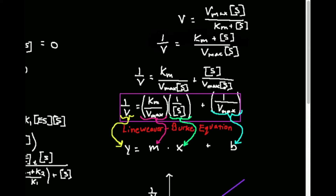We're going to start with the Michaelis-Menten equation from the last video: the rate of the enzyme is equal to the Vmax times the substrate concentration divided by the sum of Km plus substrate concentration. The first thing I'm going to do is take both sides of this equation and take the reciprocal. So when I take the reciprocal of V, that's one over V. Then the denominator goes to the numerator - Km plus the substrate concentration - and the numerator goes to the denominator, Vmax times concentration of S.